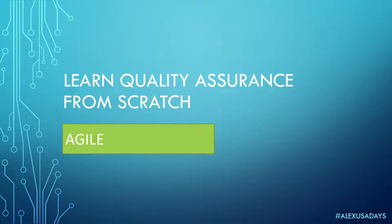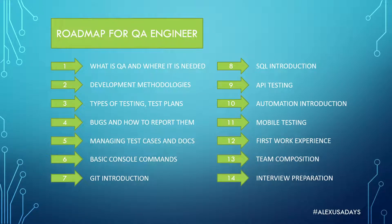Hello everyone, this is Alex. Today we're going to continue our 'Learn Quality Assurance from Scratch' playlist. Today we will talk about Agile. We're still on module two, where we talk about different development methodologies, and we will have some more to cover before we go into module three, where we'll talk about types of tests and test plans.